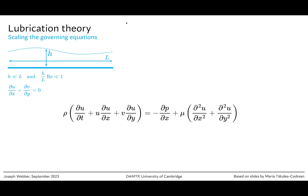The key argument we need to use is that we want a thin gap — we want the horizontal length scale, in this case L, to be much, much greater than the vertical length scale, which in this case is H. We need one more approximation to make the scaling arguments, and that's got something to do with the so-called reduced Reynolds number.